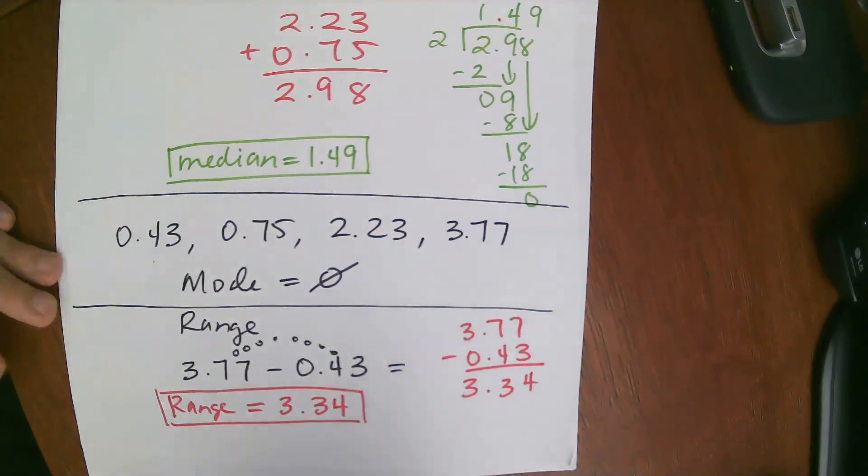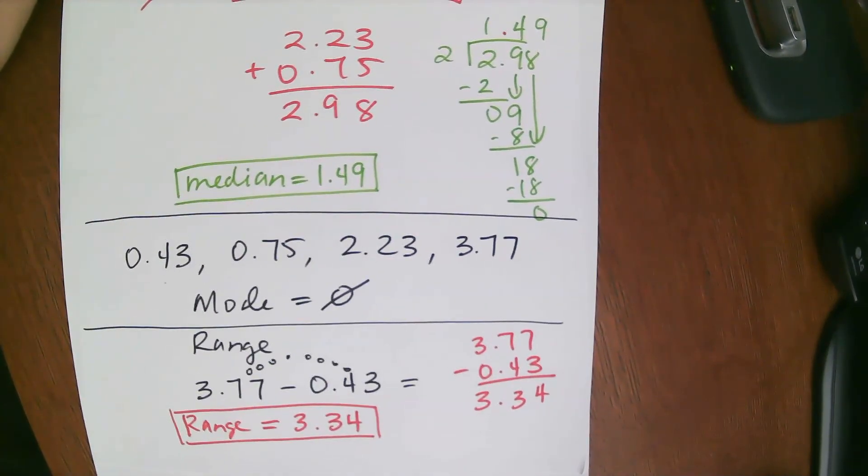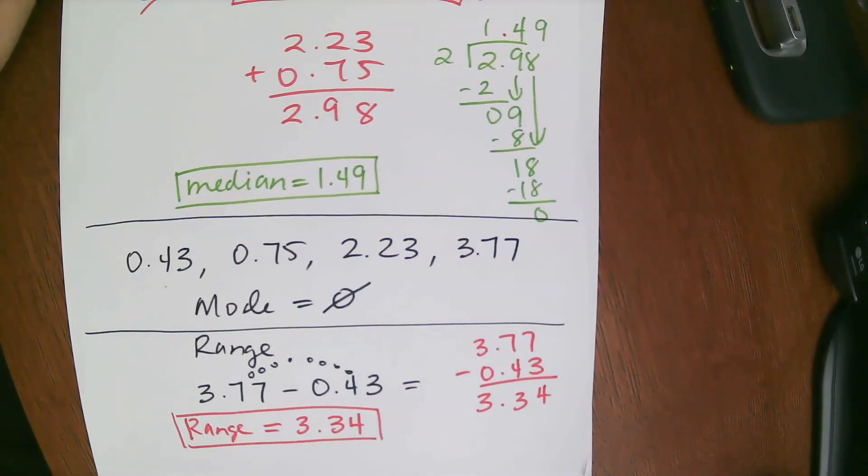So that is how we calculate mean, median, mode, and range when we're dealing with decimals. It's very similar to whole numbers, only the math is a little bit different because we are dealing with decimals. Hopefully this was helpful to you guys. Talk to you soon. Bye-bye.